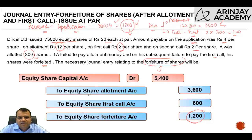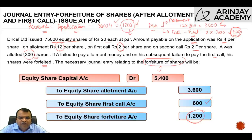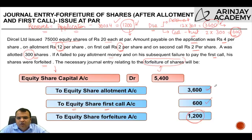The first call which was due but not received will be credited by rupees 600. This is because when the amount was due from the shareholder, we would have debited the equity share first call account and credited the share capital account. Similarly for share allotment, the rupees 3,600 that we calculated will be reversed. All these amounts will be reversed from equity share capital account, as these are parts of the equity share capital account.